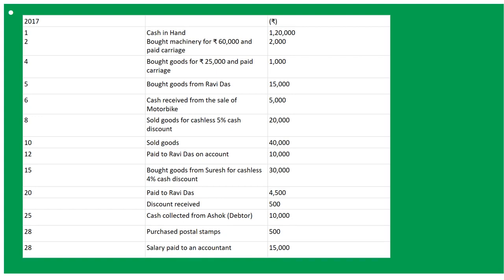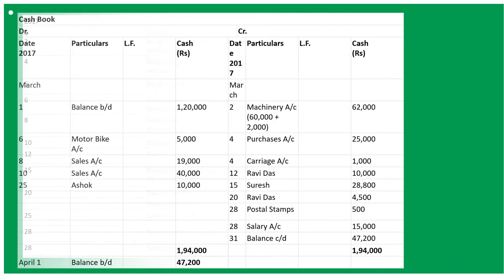Now see its solution. On March 1st, cash in hand is 1 lakh 20,000, so March 1st: To Balance B/D it will be 1 lakh 20,000. March 2nd: bought machinery for 60,000 and paid carriage 2,000, so it will be By Machinery Account and the amount will be 62,000, including carriage amount.